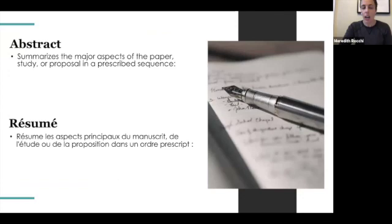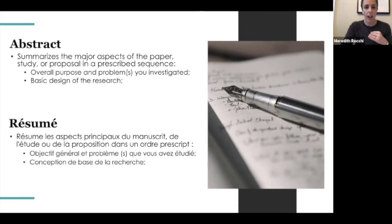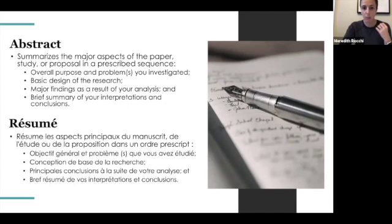An abstract is a short paragraph that summarizes the major aspects of either a paper, a study, or a research proposal in a prescribed sequence. Overall, it should cover the purpose of the work or research you did and clearly state what problem you are trying to address. It should cover the basic design of the research, but not in too much detail. It needs to include the major findings as a result of your analysis, and finally a brief summary of your interpretations and conclusions.